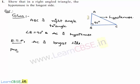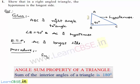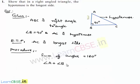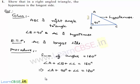Now let us move on to the procedure. In a triangle, we know that the sum of angles is equal to 180 degrees. We can write angle A plus angle B plus angle C is equal to 180 degrees, which implies angle A plus 90 degrees plus angle C is equal to 180 degrees, which implies angle A plus angle C is equal to 90 degrees.